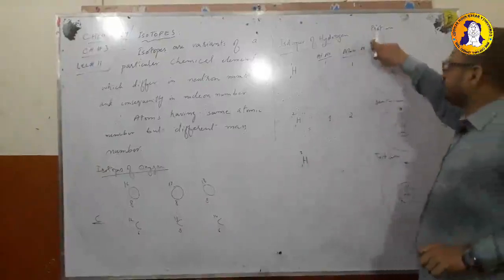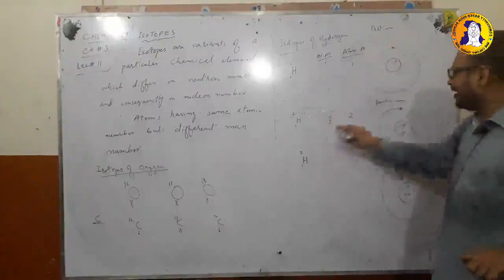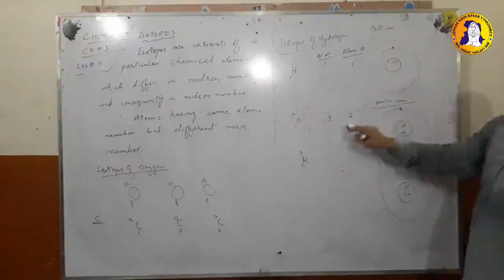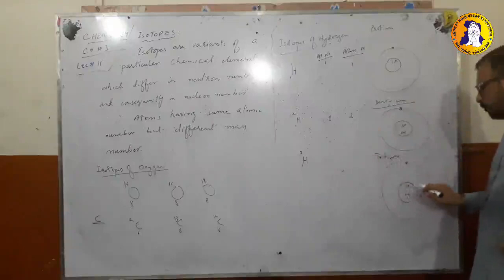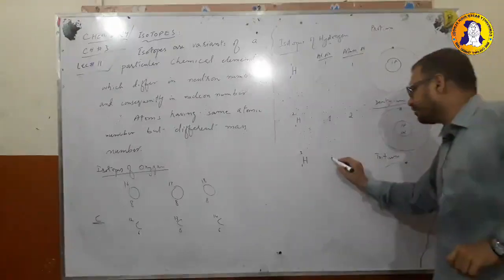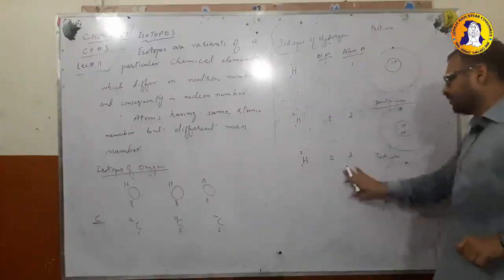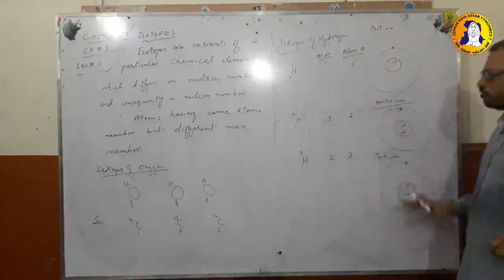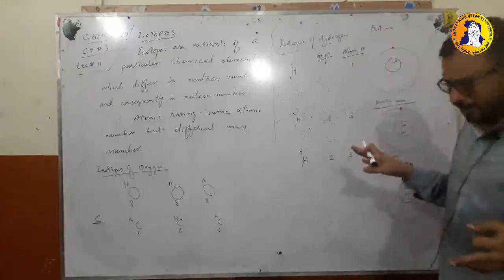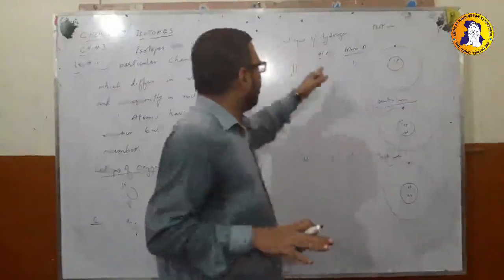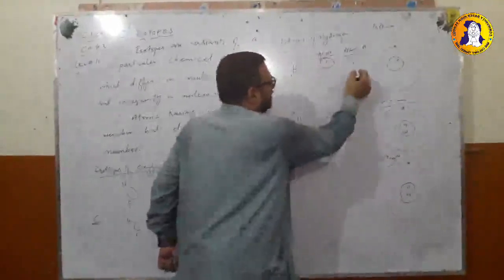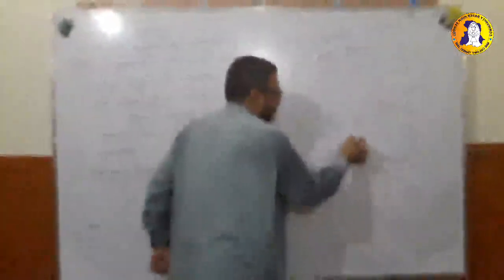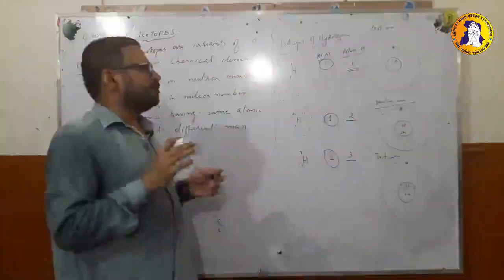The first form is known as ordinary hydrogen or protium. The second is known as deuterium. The third is known as tritium — in tritium, one proton and two neutrons are found in the nucleus, so it has atomic number one and mass number three. In all three forms the atomic number is always the same, but the mass number is different due to the difference in the number of neutrons.